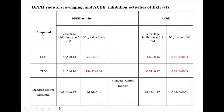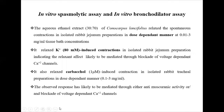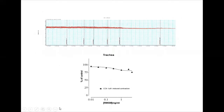DPPH radical scavenging activity was done using quercetin as standard. Both dichloromethane and methanol extracts gave significant DPPH activity compared to the standard. Acetylcholinesterase inhibition activity was also quite significant when compared to the standard. Antispasmodic activity was seen on isolated tissue. The aqueous ethanol extracts of Conocarpus lentifolius relaxed spontaneous contractions in isolated rabbit jejunum in a dose-dependent manner, and potassium-induced contractions indicated blockade mediated by voltage-dependent calcium channels.